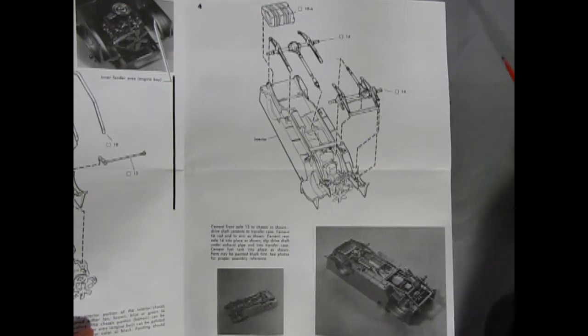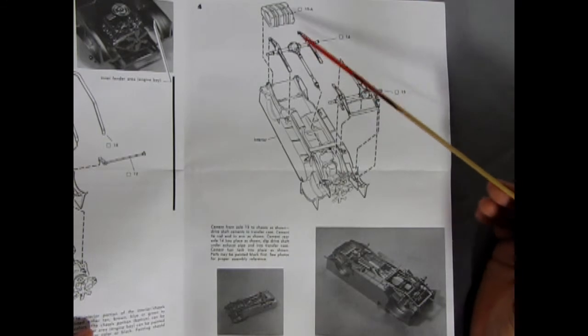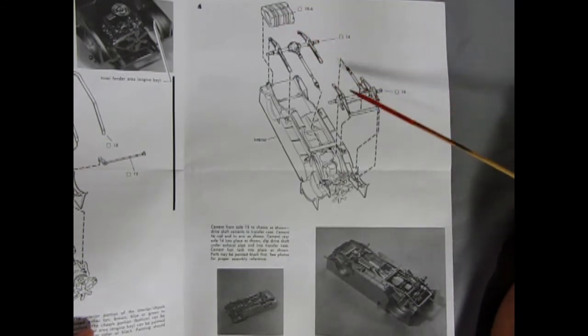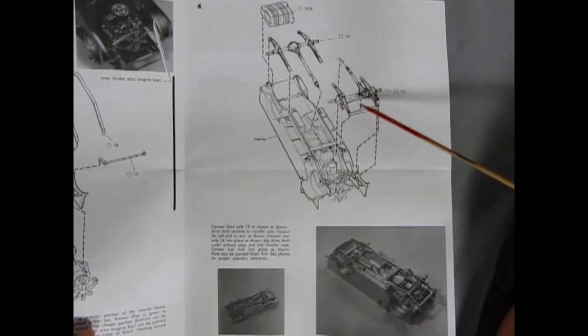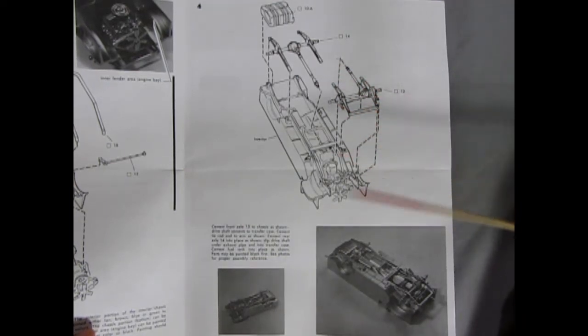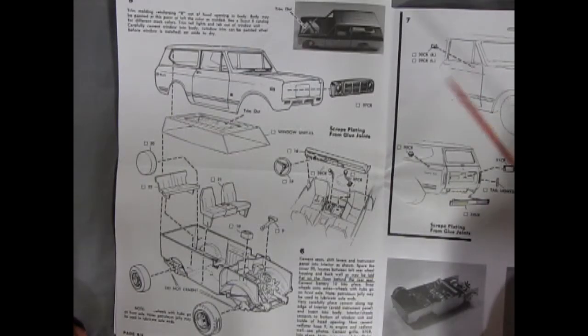Panel four shows our suspension components going together. There's our differential with the drive shaft as well as our gas tank, and then on the front, because of course we've got the transfer case, so we have a differential going to the front for four-wheel drive. And again there's these photographs at the bottom showing you how it all goes together.